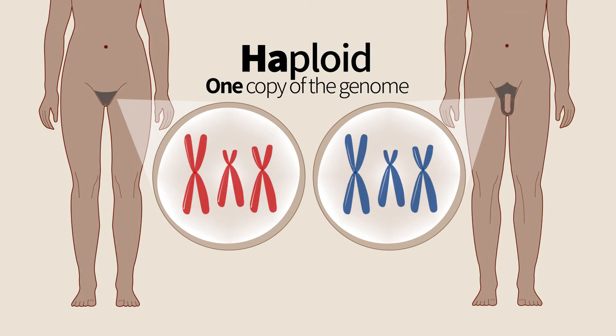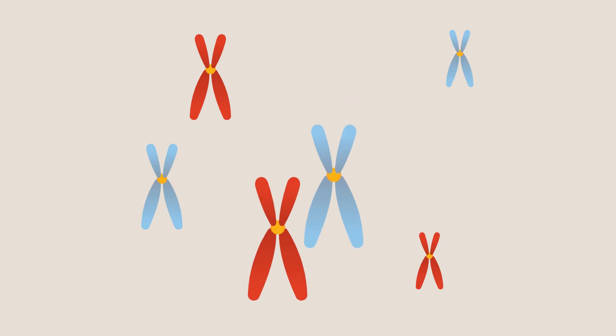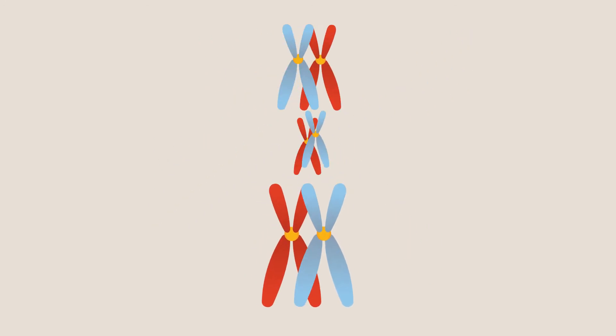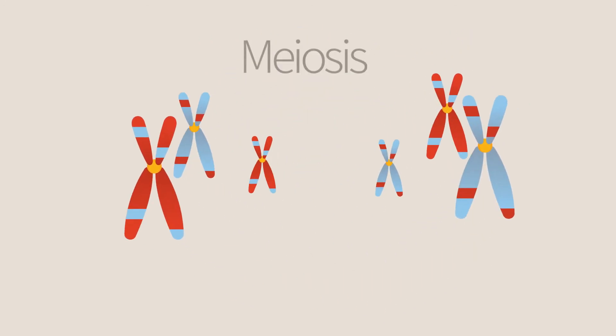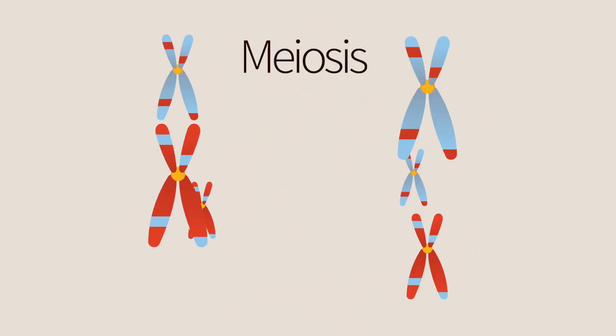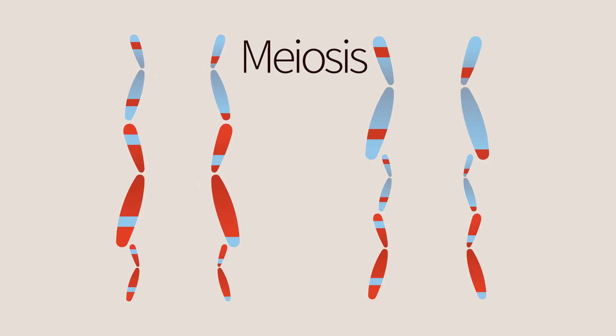One copy comes from our father and the second from our mother. In order to reproduce, we have to make haploid gametes by a special process called meiosis, which is the basis of all sex and will be described in detail in the next chapter. At this stage, it is sufficient to know that each organism has two copies of the genome.